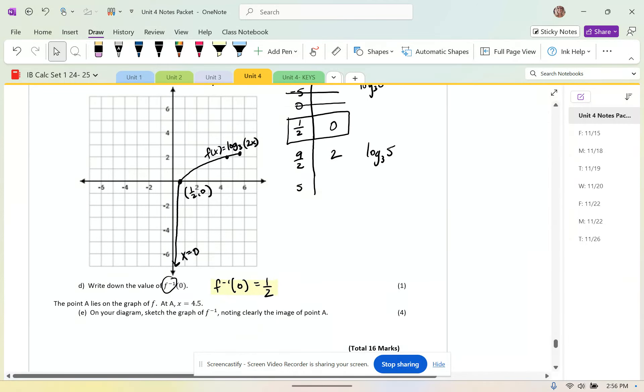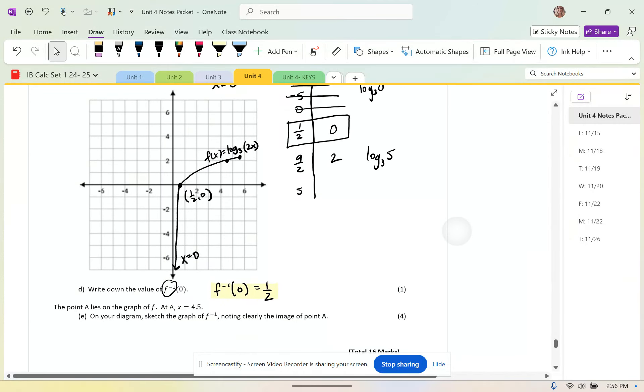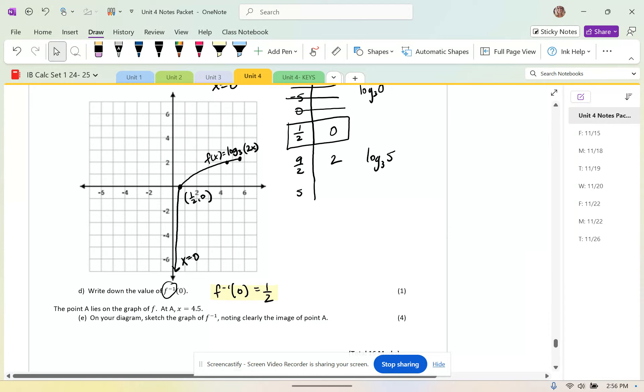The point A lies on the graph of F. At A, x equals 4.5. So 4.5. That's this guy. This is A. On your diagram, sketch the graph of the inverse, noting clearly the image of point A. So the image of point A then, if A is 4.5, 2, then the image of A is going to be 2, 4.5. Good to know.